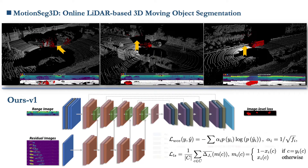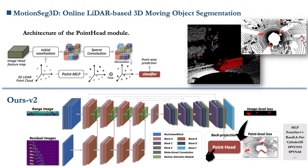We call the image-level-only network structure as Ours V1, which has been greatly improved in moving object segmentation accuracy. However, boundary blurring is unavoidable due to limited feature map resolution and dimensionality reduction, leading to false positive predictions around object boundaries. To tackle this issue, we propose a coarse-to-fine strategy and use a point head to refine the segmentation results after the image branch. This two-step coarse-to-fine strategy makes supervision more effective and utilizes both pixel-wise and point-wise supervision.